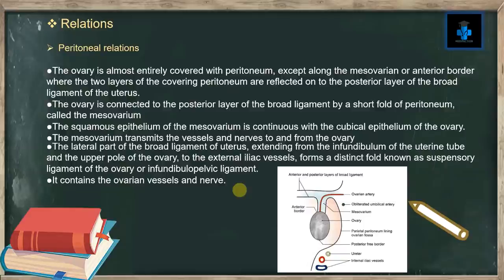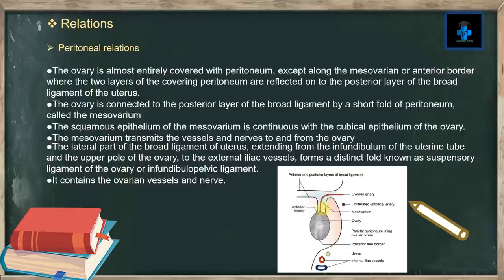The ovary is connected to the posterior layer of the broad ligament by a short fold of peritoneum called the mesovarium. The squamous epithelium of the mesovarium is continuous with the cubical epithelium of the ovary. The mesovarium transmits the vessels and nerves to and from the ovary. The lateral part of the broad ligament extending from the infundibulum of the uterine tube and the upper pole of the ovary to the external iliac vessels forms a distinct fold known as the suspensory ligament of the ovary or infundibulopelvic ligament, and it contains the ovarian vessels and nerves.